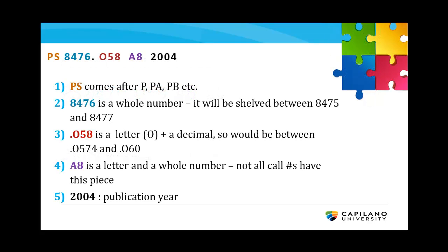So, to recap: single letters come before double letters. The first number is a whole number. The third chunk is a letter and a decimal, and increases by decimal place. The fourth part isn't always included, so don't worry if yours doesn't have it. And finally, the last piece is the publication year.